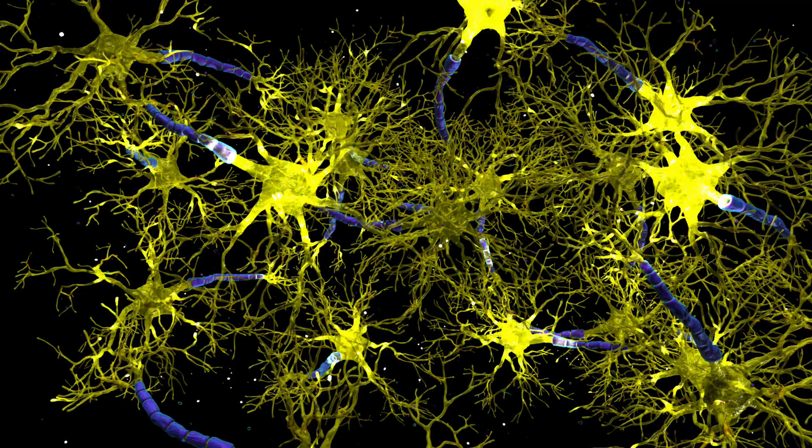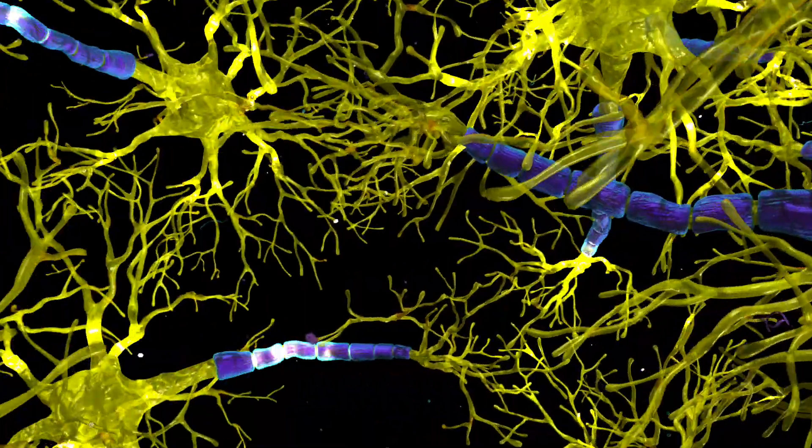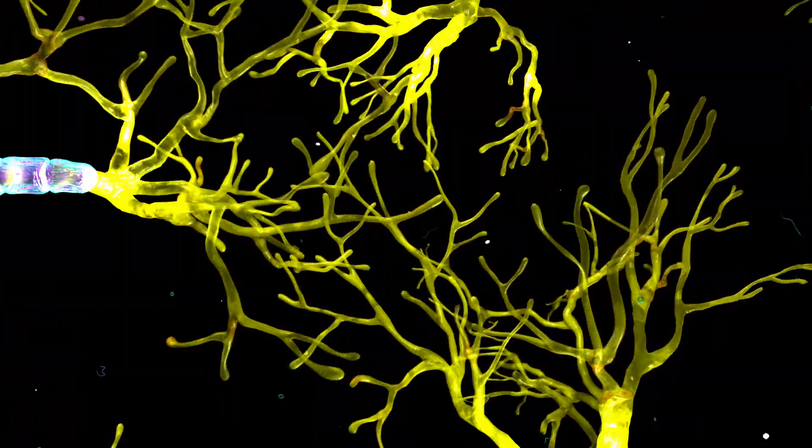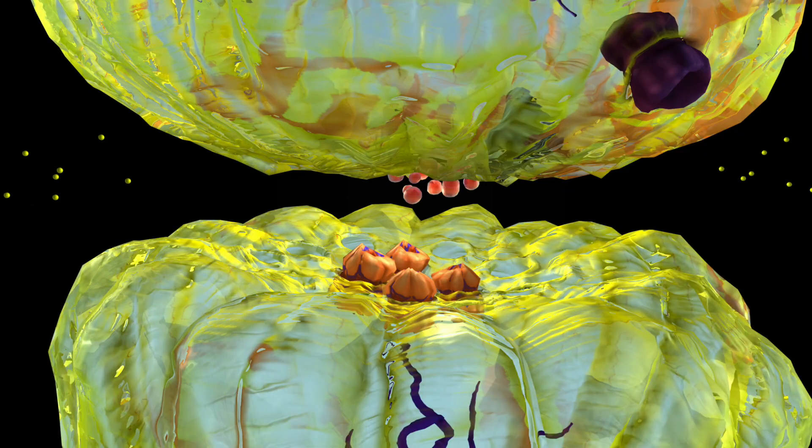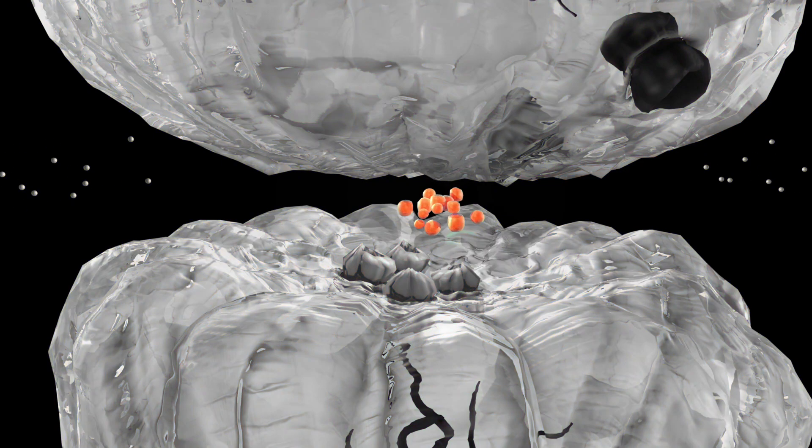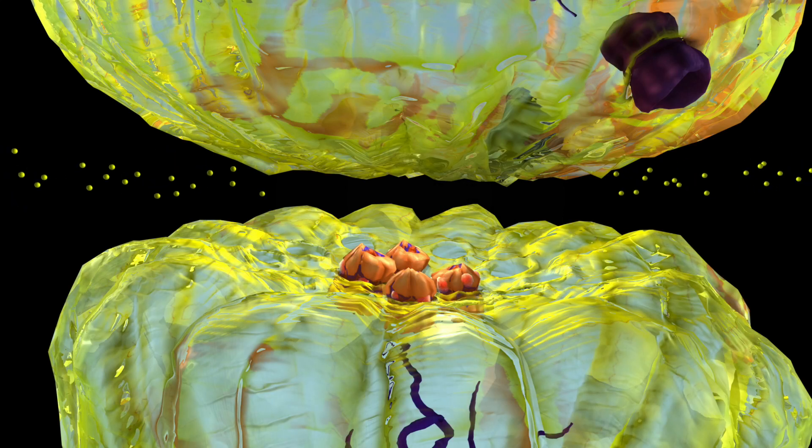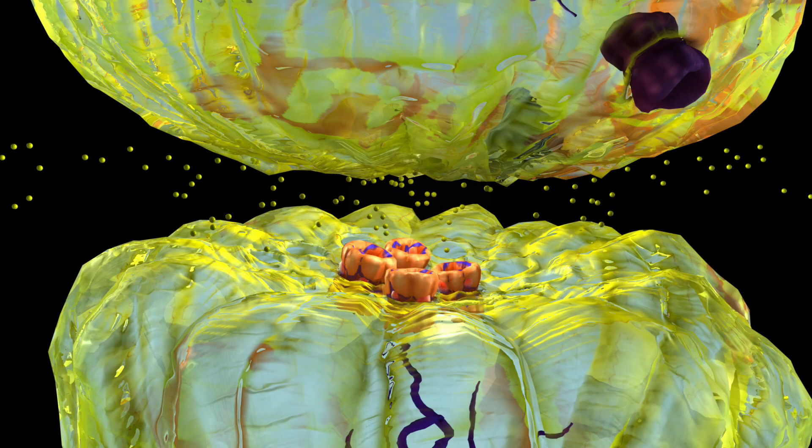Electrical signals pass between these gaps from one neuron to the next with the help of neurotransmitters. This is the neurotransmitter acetylcholine. When acetylcholine binds to the receptor, it opens the receptor and allows sodium to enter.